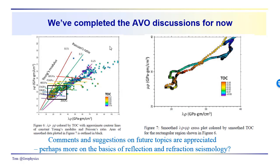As we've pretty much wrapped up our AVO discussions for now, in this plot we're seeing Young's modulus and Poisson's ratio contours superimposed on lambda rho and mu rho. Just a reminder here that our observations are influenced by the characteristics of the seismic wavelet that we're using. I hope these videos on the AVO topic have been useful, and any comments and suggestions on future topics are appreciated. You may want to see more on basic reflection and refraction seismology - let me know. Thanks for joining us and see you next time.